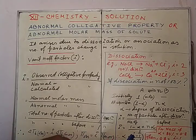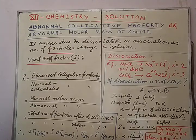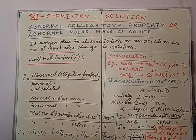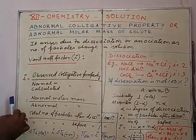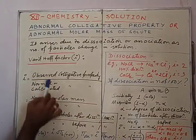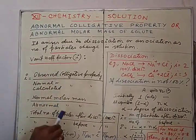Hence, what will happen? The value of the colligative property will also change. Now, this can be addressed by the Van't Hoff factor.